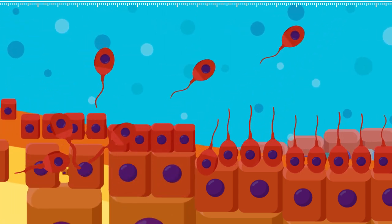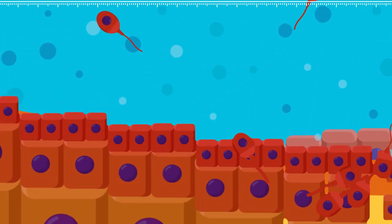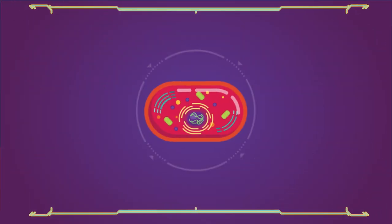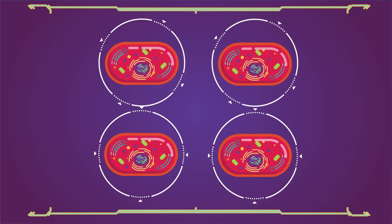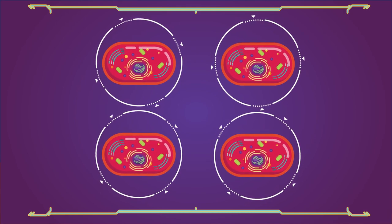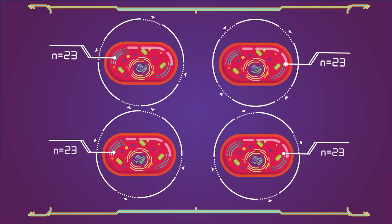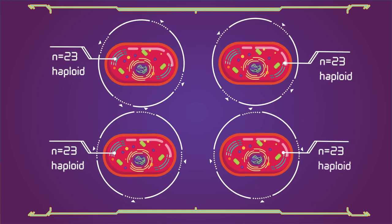These cells are our sex cells, sperm in males, eggs in females. During meiosis, one cell divides twice to form four daughter cells. These four daughter cells only have half the number of chromosomes than the parent cell. They are haploid.